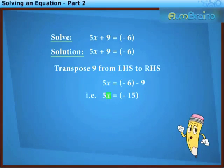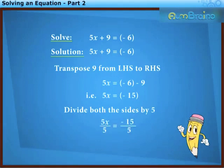Now to obtain x, let us divide both the sides by 5. We get 5x upon 5 is equal to minus 15 upon 5. Hence we get x is equal to minus 3, which is the required solution.